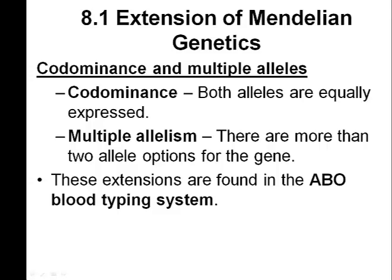We'll also talk about an example of multiple allelism. Multiple allelism occurs when you have more than simply two alleles. In our black and white allele example, we just have two — one allele for black and one allele for white in rabbit coat color. In some cases we have three or more alleles that code for a particular trait, and we're going to use the ABO blood typing system in humans as an example.